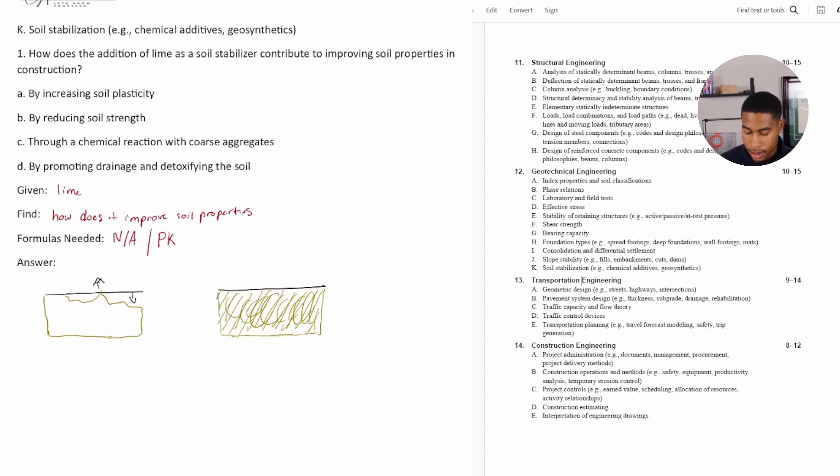So A, by increasing soil plasticity, no. All right. It decreases the soil plasticity so that the volume doesn't change. B, by reducing soil strength, that doesn't improve properties by any means. All right. Through a chemical reaction with coarse aggregates, no. Or by detoxifying, by promoting drainage and detoxifying the soil. So yes, it's going to be D.